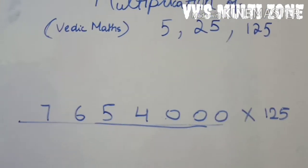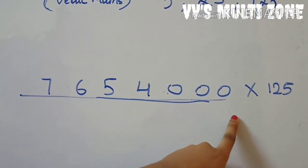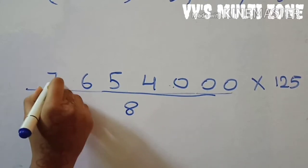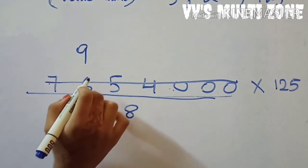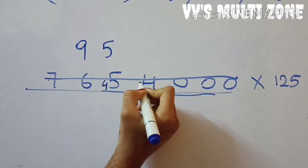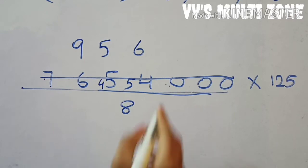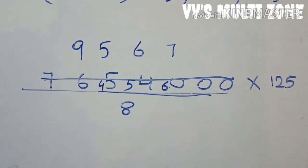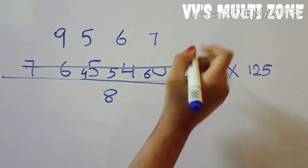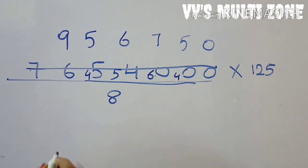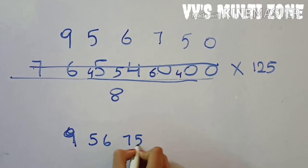The next question is 7654 into 125. I've added three zeros and divide by eight. Eight nines are seventy-two, four gets carried. Eight fives are forty, five gets carried. Eight sixes are forty-eight, six gets carried. Eight sevens are fifty-six, six gets carried. Eight fives are forty, zero as it is. The answer is nine lakh fifty-six thousand seven hundred and fifty.